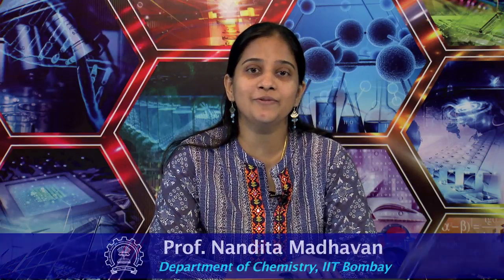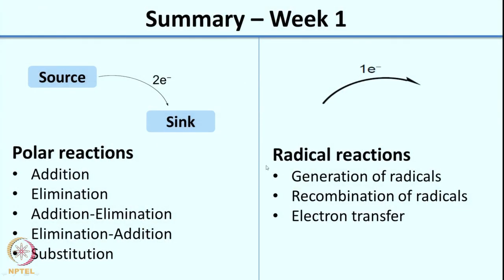Welcome to the second week of this course on reaction mechanisms. To summarize what we did last week: we looked at how to write reaction mechanisms using arrow pushing or electron pushing, and we specifically looked at two major classes of organic reactions — polar reactions and radical reactions.